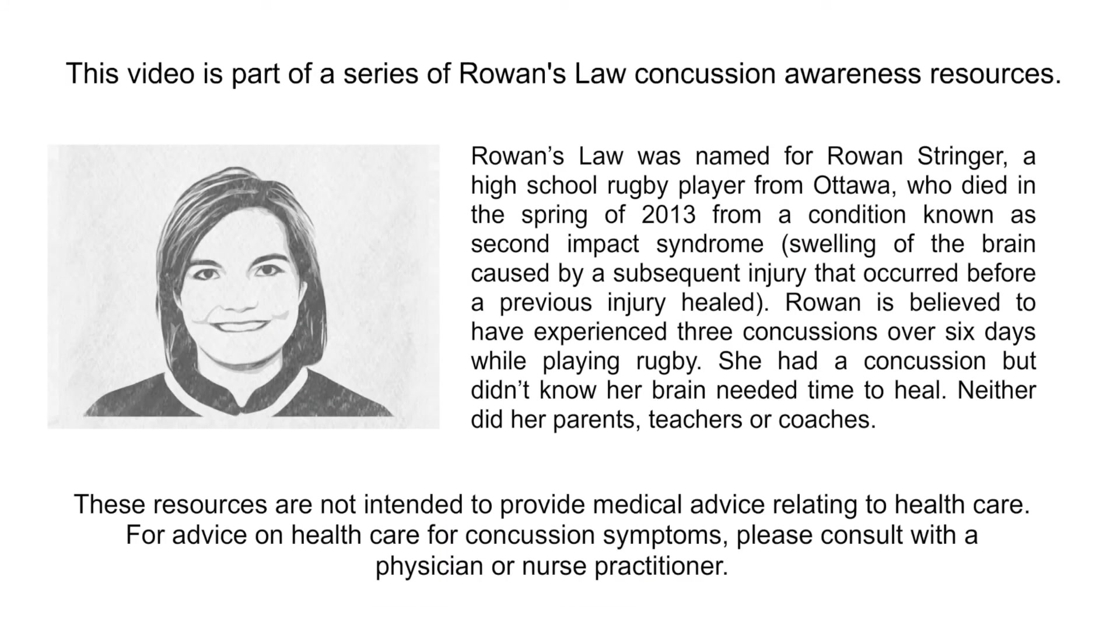This video is part of a series of Rowan's Law Concussion Awareness Resources. Rowan's Law was named for Rowan Stringer, a high school rugby player from Ottawa, who died in the spring of 2013 from a condition known as Second Impact Syndrome, swelling of the brain caused by a subsequent injury that occurred before a previous injury healed. Rowan is believed to have experienced three concussions over six days while playing rugby. She had a concussion, but didn't know her brain needed time to heal. Neither did her parents, teachers, or coaches.